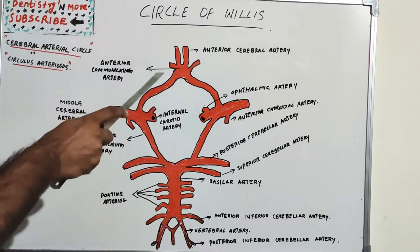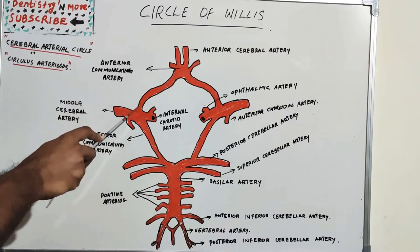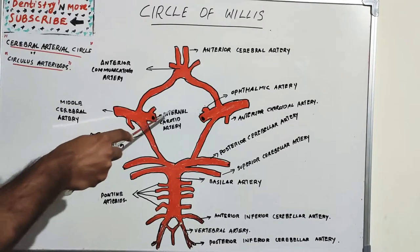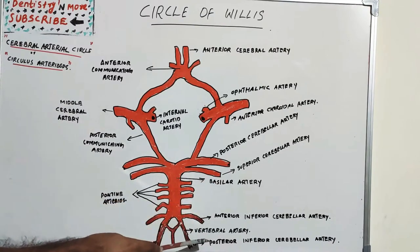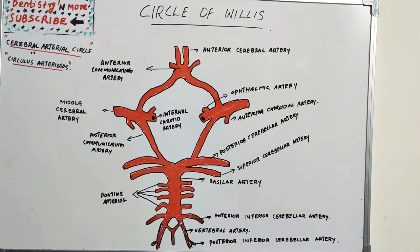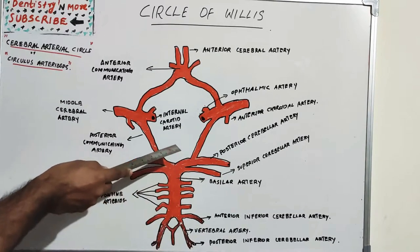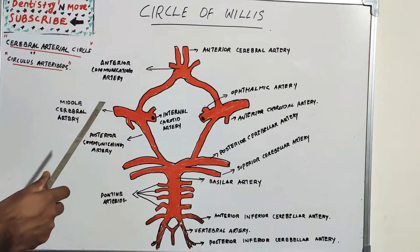It is an anatomic ring of arteries located at the base of the brain. This arterial circle connects the two major arterial systems to the brain: the internal carotid arteries and the vertebral basilar system. It is formed by four paired vessels and a single unpaired vessel with numerous branches that supply the brain.